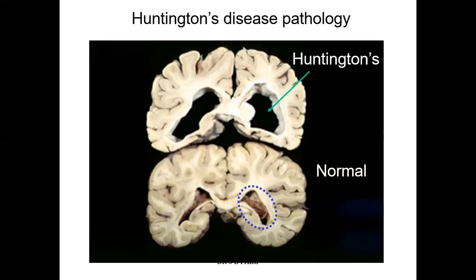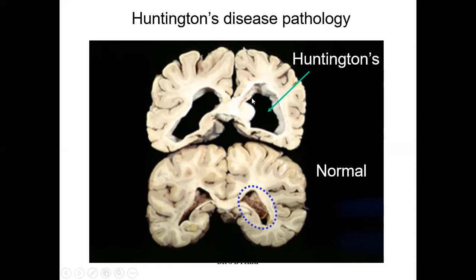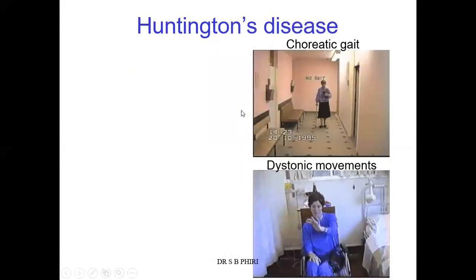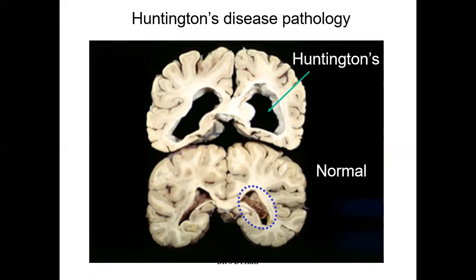The hallmark of the disease is mainly rapid, jerking motions with no clear purpose — called chorea or dance-like movements. When you do a cross-section of the brain, you can see atrophy of the striatum and enlargement of the ventricles. In the normal brain, the lateral ventricles are small, but in Huntington's disease the ventricles become larger because of atrophy of the surrounding striatal tissue. On top of that, there is also atrophy of the frontal and temporal cortices.